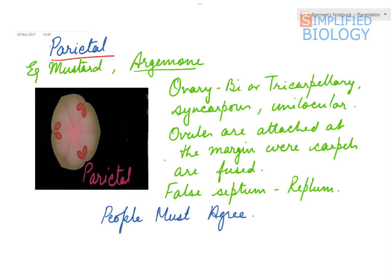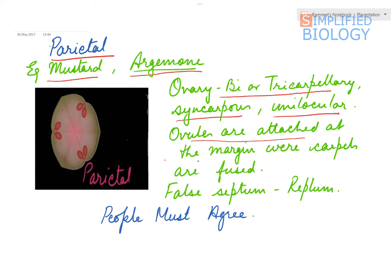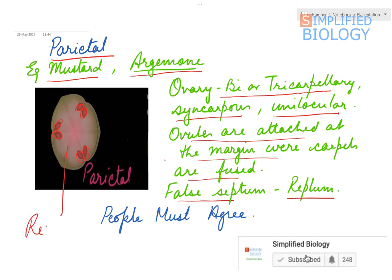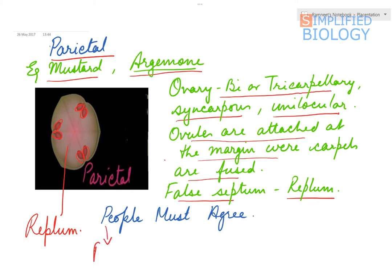Next is parietal placentation, which is characteristic of mustard and argemone, also known as prickly poppy. In parietal placentation, the ovary can be bicarpillary or tricarpillary, syncarpous (united), and unilocular — even though the ovary is bi- or tricarpillary, only a single cavity is present. The ovules are attached at the margins where the carpels are fused, and a false septum called the replum can be seen. You can remember this as 'People Must Agree': P for parietal, Must for mustard, Agree for argemone.